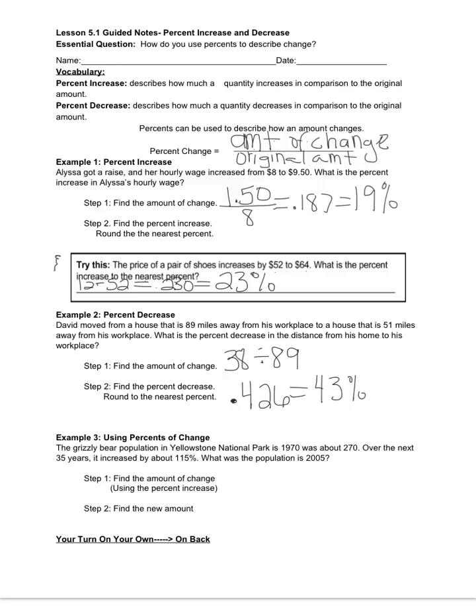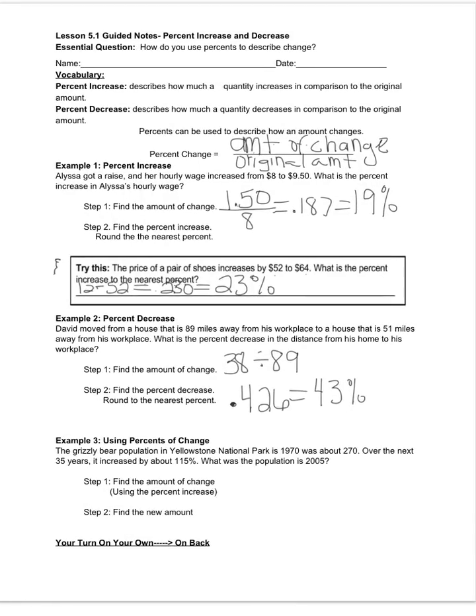So we have to use this percent increase right here, this information that we're given about the 115 percent. We need to use that. So ultimately, I want to know, well what is 115 percent of 270, because it increased by that much. So when I say that out loud, I want to know what 115 percent of 270 is. So when I think about this, I know that the word of means to multiply, so I'm going to have to take something times 270.